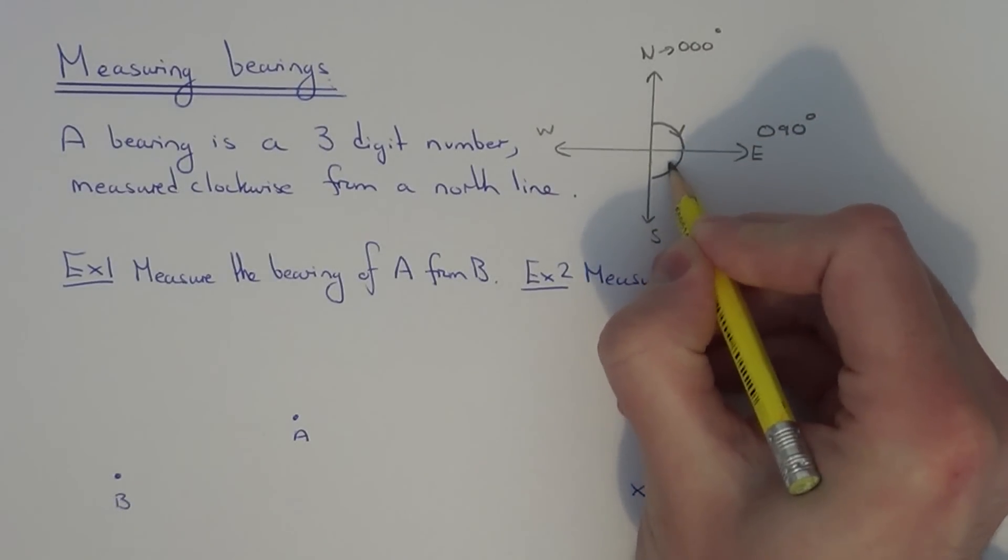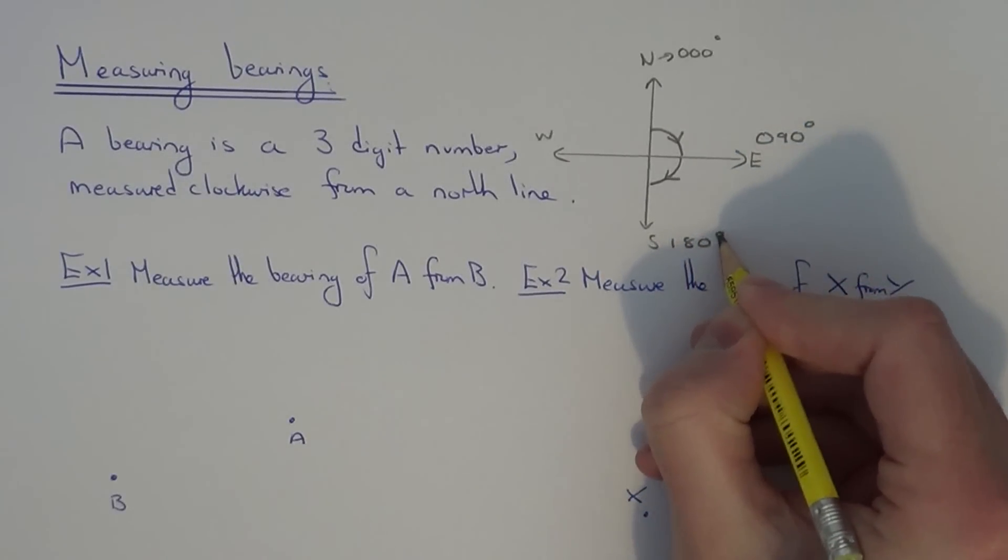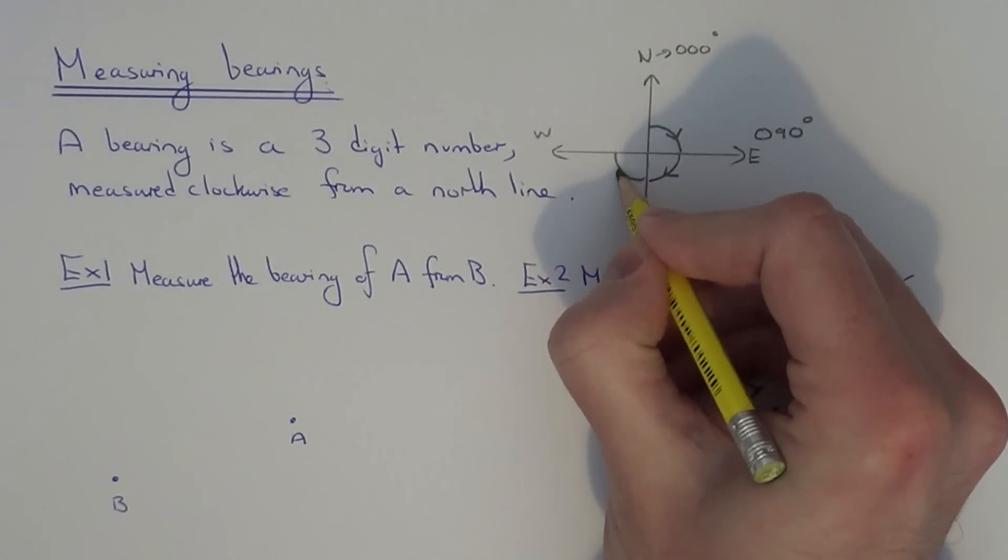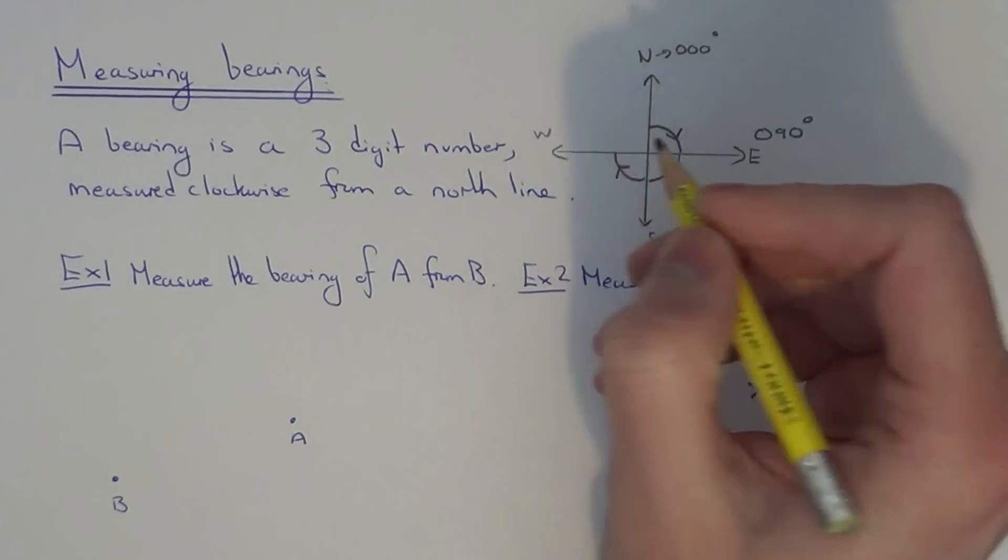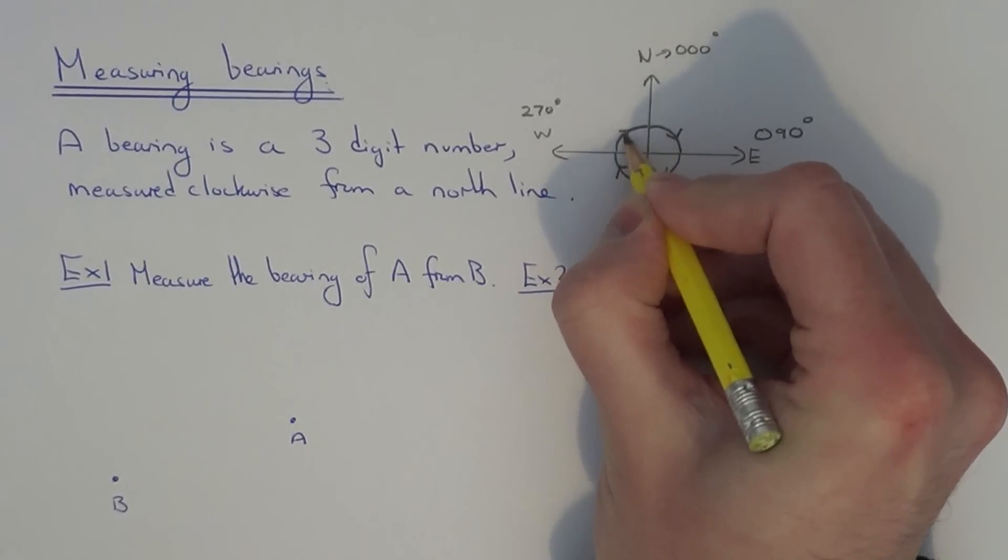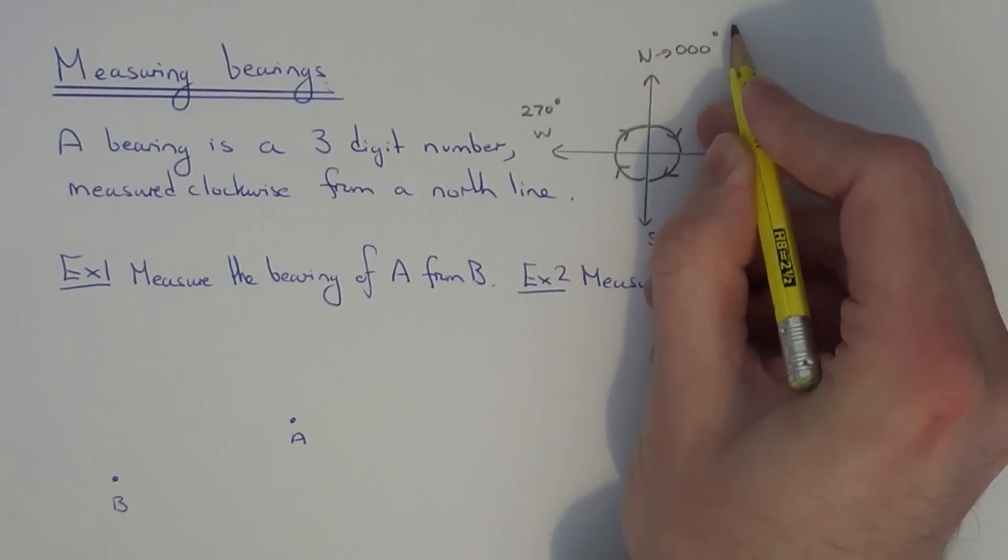Again if we turn a further 90 degrees we get south which is 180 degrees. And going around a further 90 degrees we get west which is 270 degrees. And then if we turn a further 90 we'll be back at north which is zero zero zero degrees.